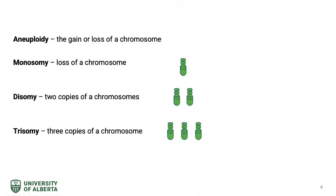We'll start off by going through some terminology. Aneuploidy is defined as the gain or loss of a chromosome. Normally, humans have 46 chromosomes. Monosomy is the loss of a chromosome — a fetus with monosomy has 45 chromosomes. Disomy occurs when an individual has two members of a pair of homologous chromosomes, giving the normal complement of 46 chromosomes.